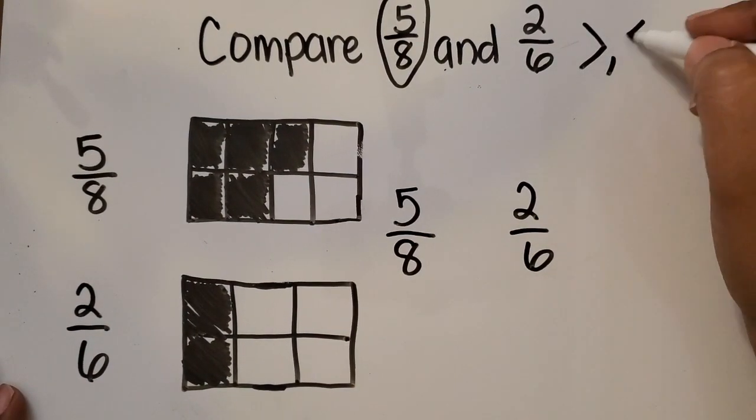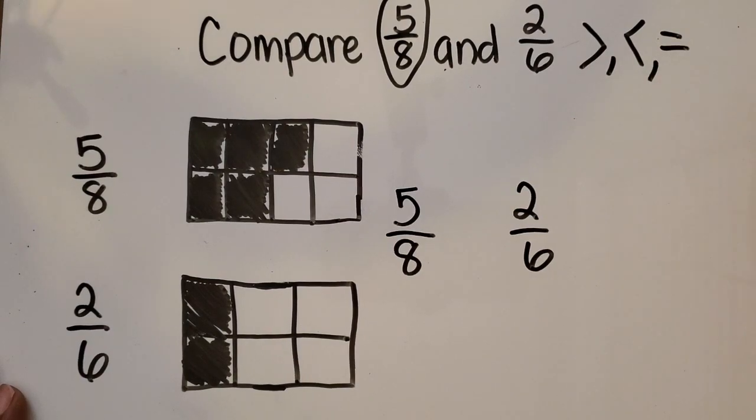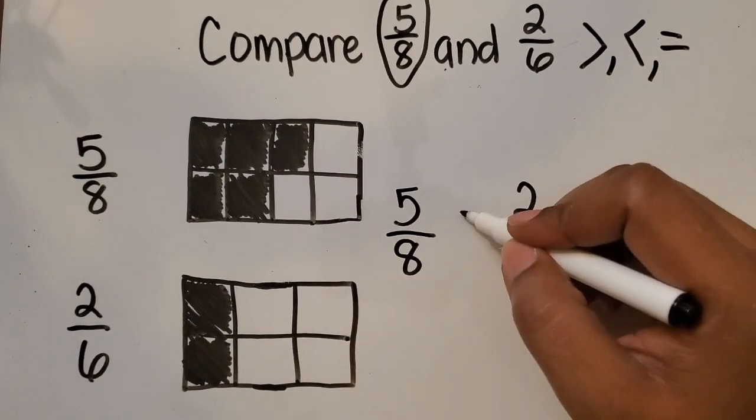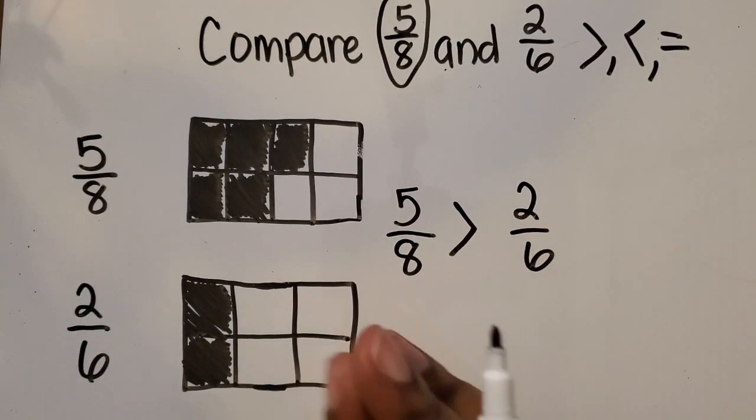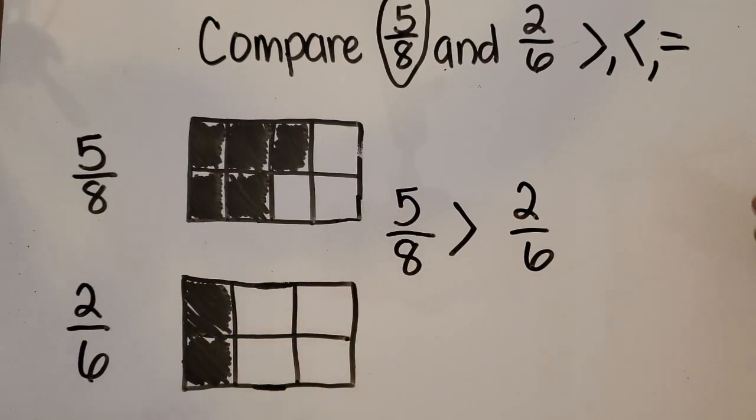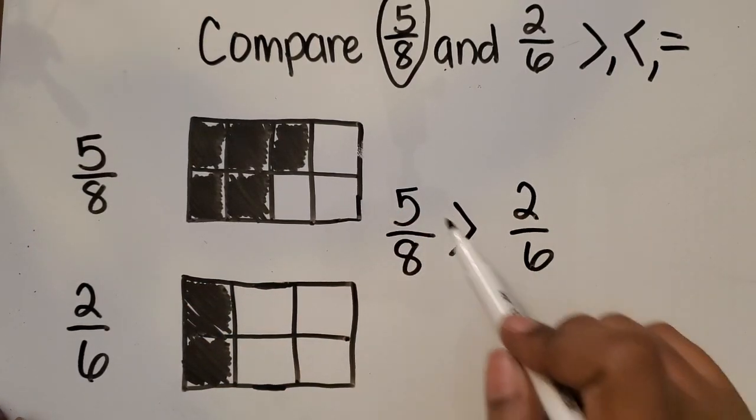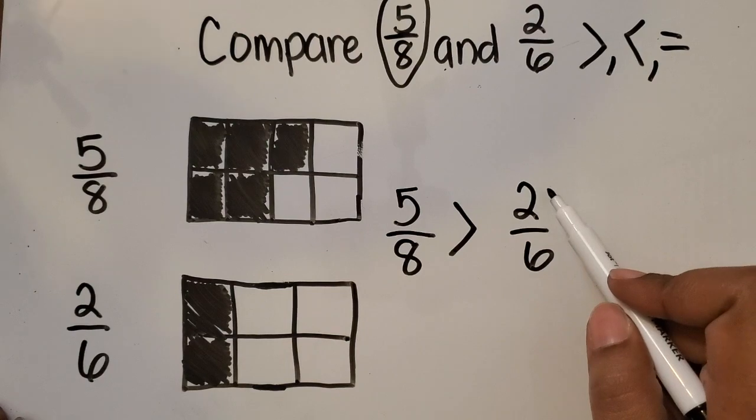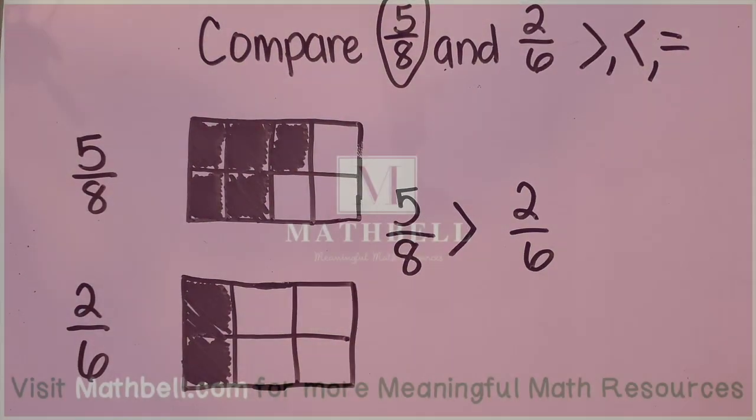So using my greater than, less than, or equal to symbols, I know 5 eighths is the greater value. So I'm going to have my symbol open to the 5 eighths. And now we can read it: 5 eighths is greater than 2 sixths.